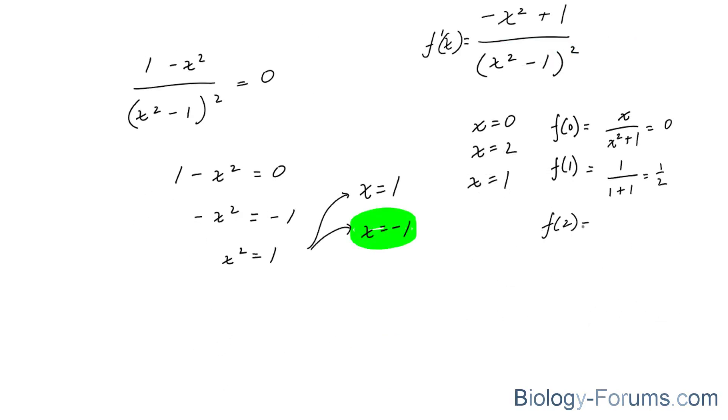So, let's try f at 2. 2, and 4 plus 1 is equal to 2 over 5. This is equal to 0.4. This right here is our maximum. And this right here is our minimum. Therefore, max occurs at x is equal to 1. And the minimum occurs at x is equal to 0.